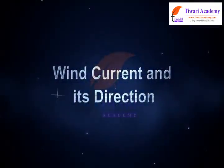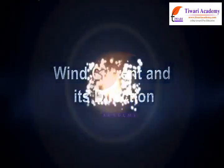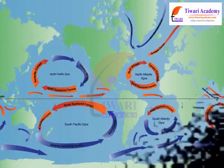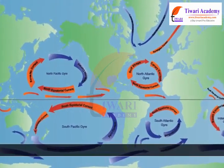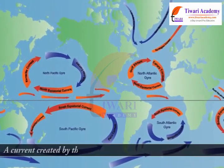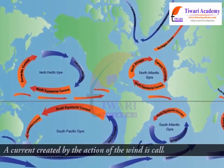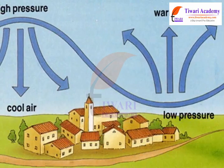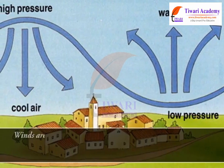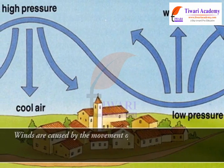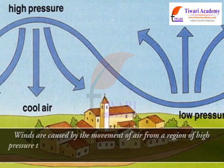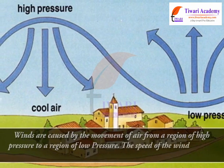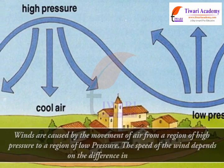Wind current and its direction. A current created by the action of the wind is called wind current. Winds are caused by the movement of air from a region of high pressure to a region of low pressure. The speed of the wind depends on the difference in pressure.